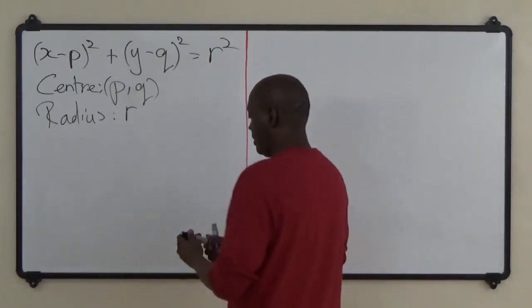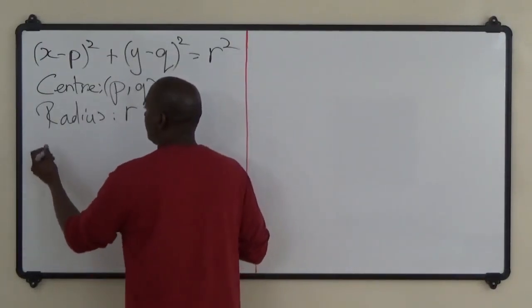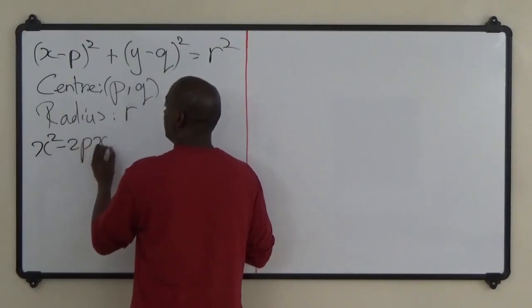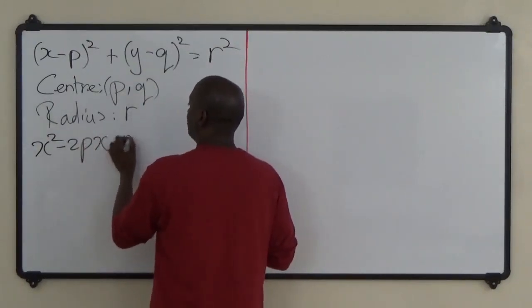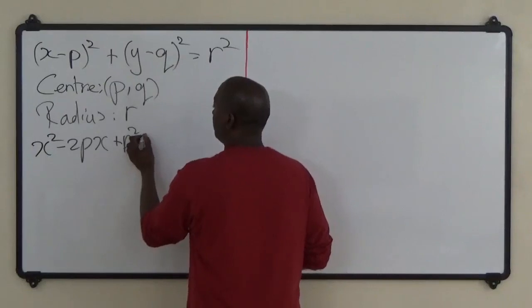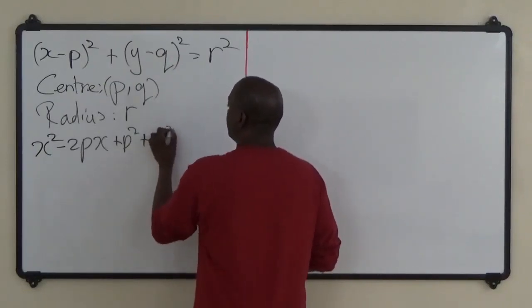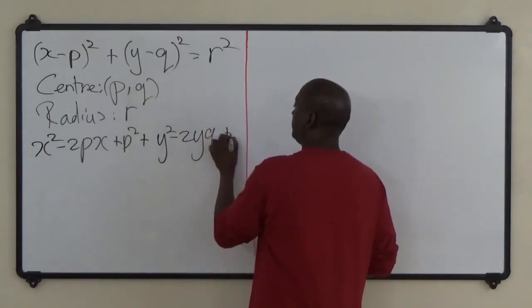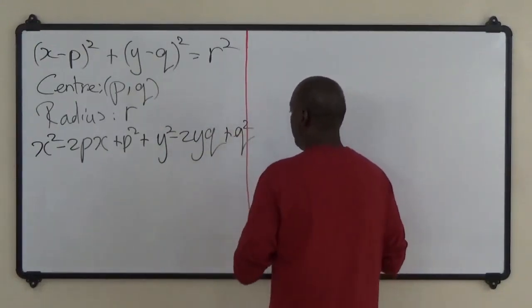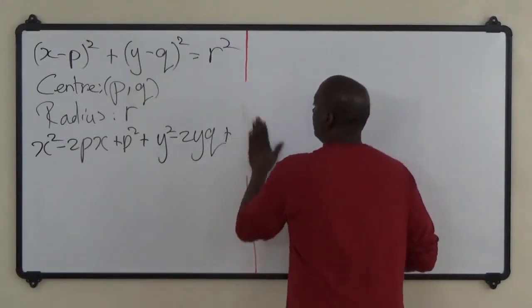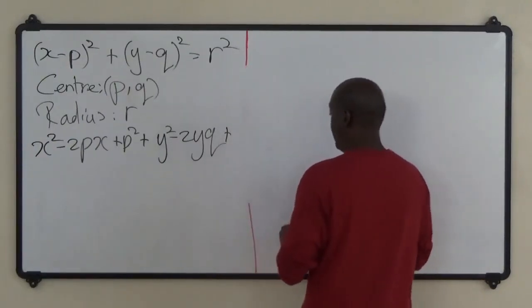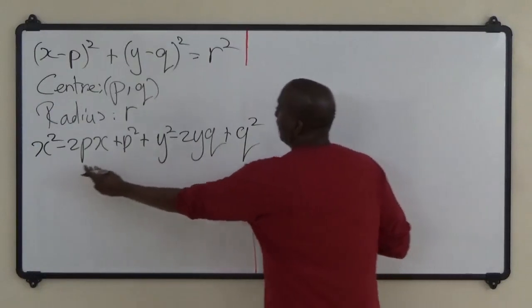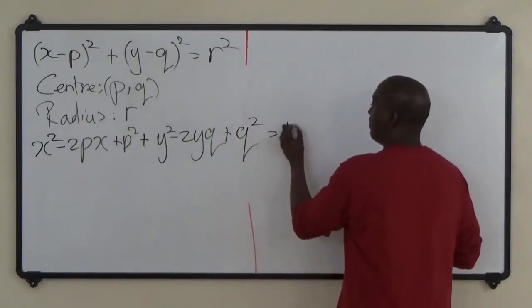Expanding: (x − p)² gives x² − 2px + p², and (y − q)² gives y² − 2yq + q². All of this is equal to r².